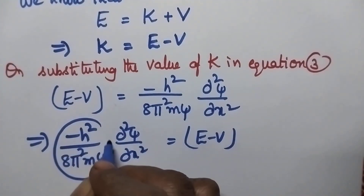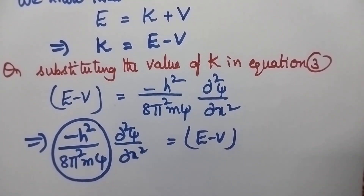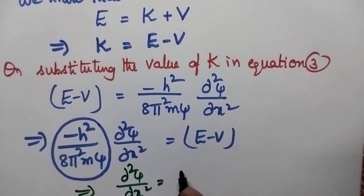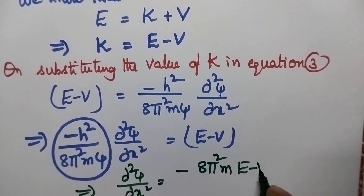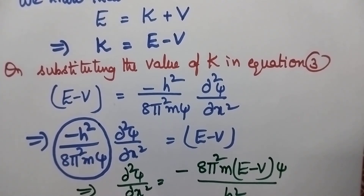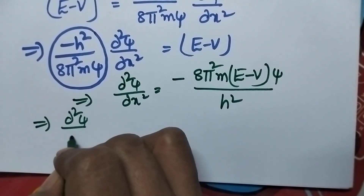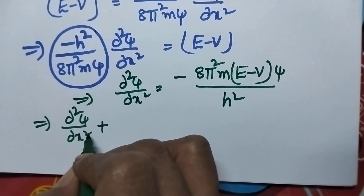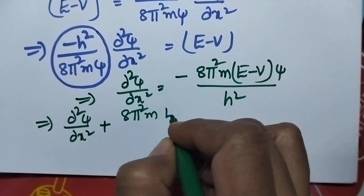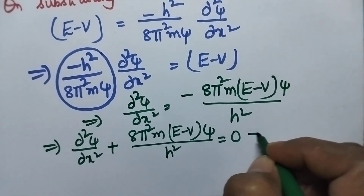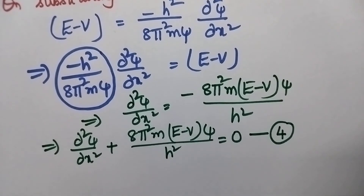Migrating the whole term to the right-hand side, we get: ∂²ψ/∂x² = −8π²m(E − V)ψ/h². That implies it can be rewritten as: ∂²ψ/∂x² + 8π²m(E − V)ψ/h² = 0. This is equation number 4 and it represents the wave nature of the electron along the x-axis.